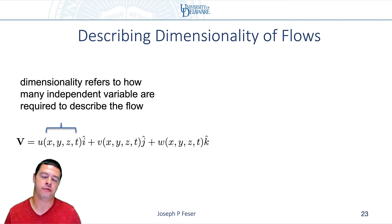I'd like to talk about one other way of classifying what a flow is, and that's the dimensionality of the flow. Many times in this class we'll come across examples of flows that can be simplified by thinking about reduced dimensionality. Dimensionality refers to how many independent variables are required to describe the flow.